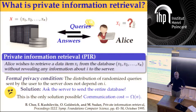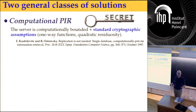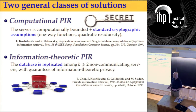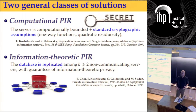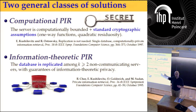That's bad, and we don't want to accept that, so there are alternative solutions of two general types. This one actually came first in the original paper by Schor, Kushilevitz, Goldreich, and Sudan. But later on, there was introduced a notion of computational PIR.